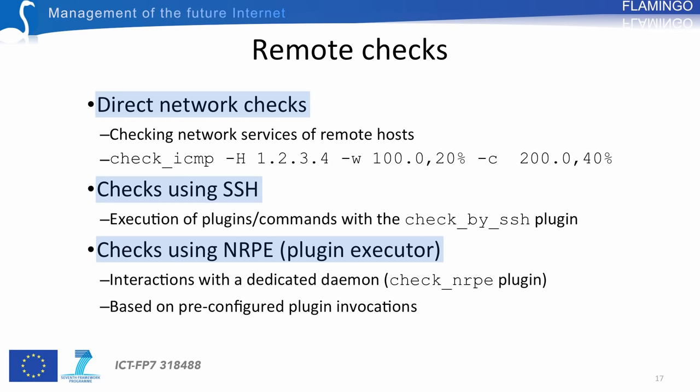You also have other alternatives for remote checks. For instance, you can execute checks using SNMP: you collect management information from SNMP agents and use a dedicated plugin called CheckSNMP, associating the SNMP reply to warning and critical thresholds to infer a service state. You can also use NSCA — the Nagios Service Check Acceptor — which allows initiating checks directly from remote machines themselves. The concept is very similar to SNMP traps.